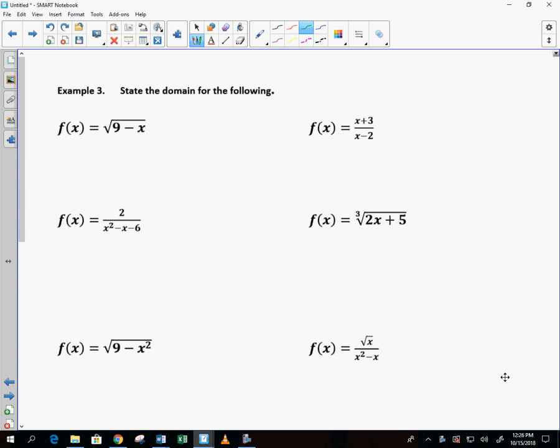Okay, so state the domain. We want to make sure we review this because I haven't seen you guys since last week Thursday. Some of you guys never really learned this at all, so let's go over it. Why isn't the first one all real numbers? Can't take square root of a negative, so 9 minus x is greater than or equal to 0. Negative x is greater than or equal to negative 9. Negative x is less than or equal to 9. So we've got negative infinity to 9.